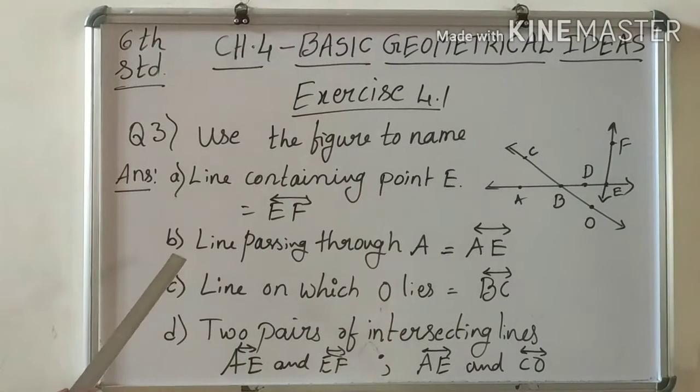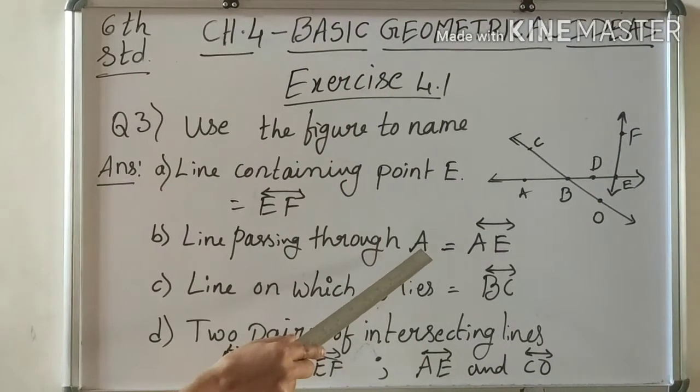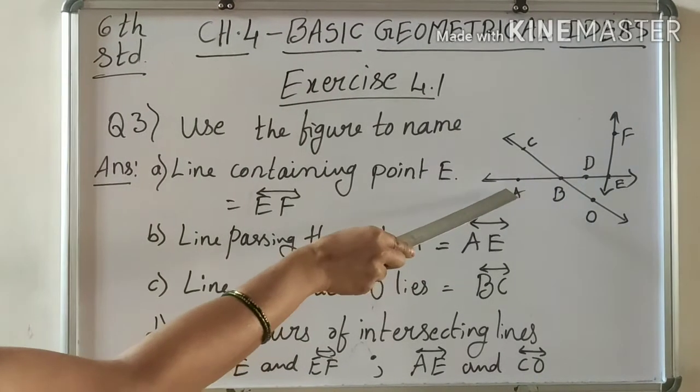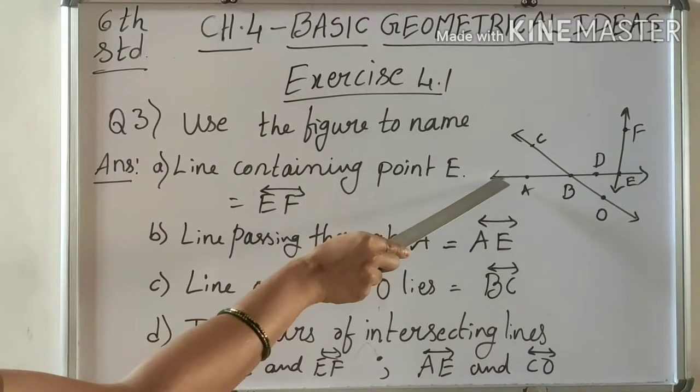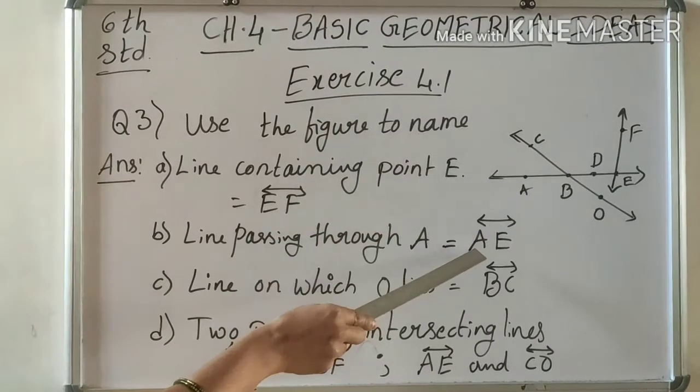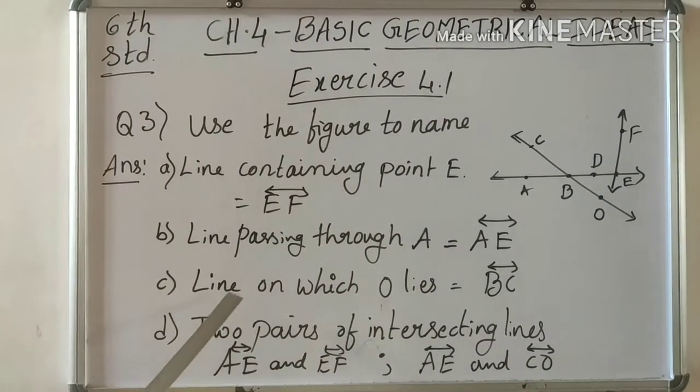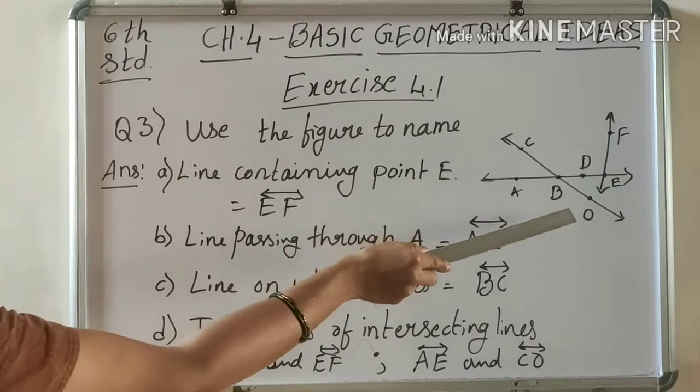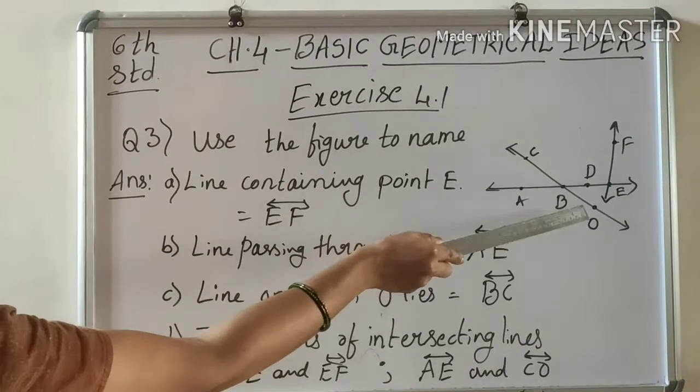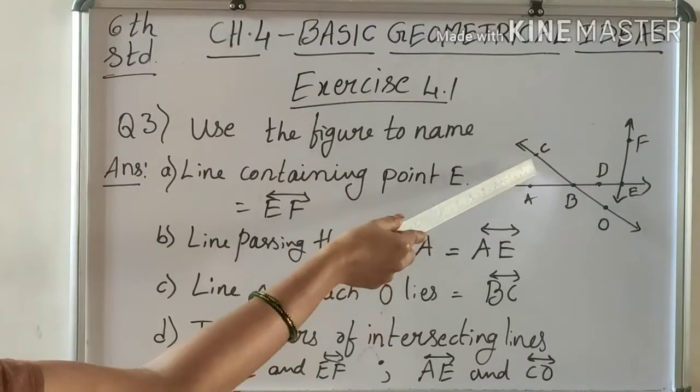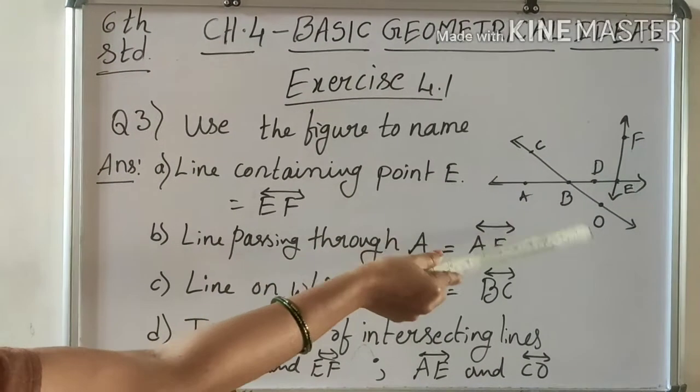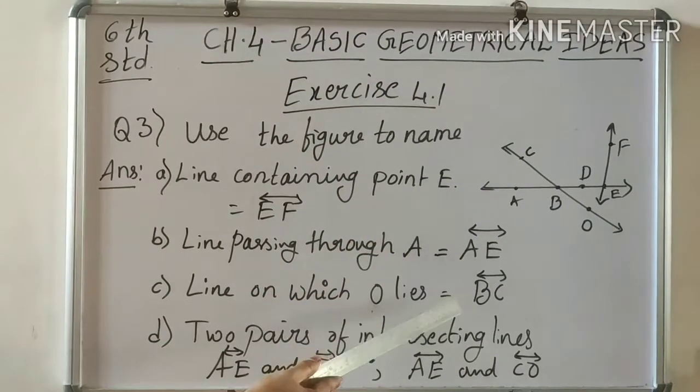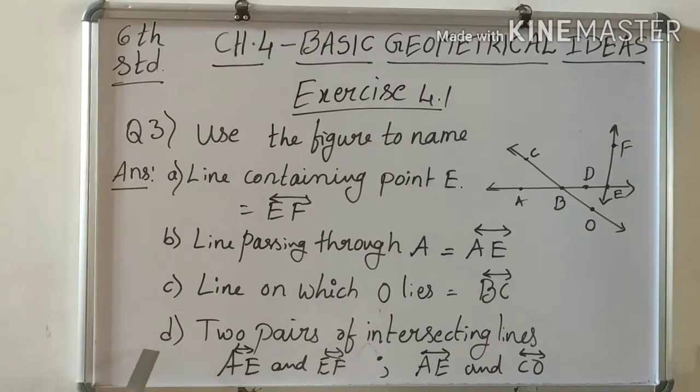Next, line passing through A: which line passes through point A? Line AE. See here, line AE. And line OC contains the O.